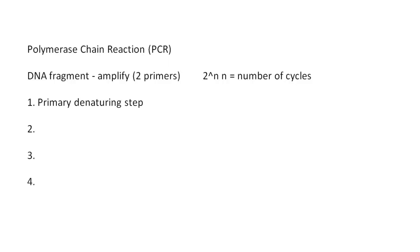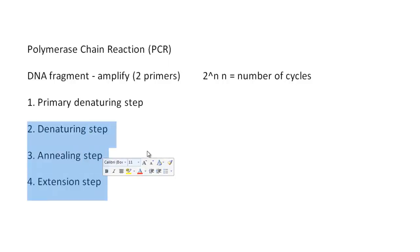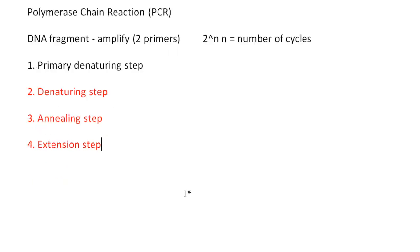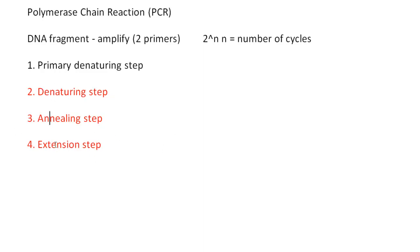Linking the three core cycle steps together: you have a denaturing step, then an annealing step, then an extension step — I'm highlighting these three in red because this is where the magic of PCR happens. Every time primers anneal to the template and extend, they need to be broken apart again in order to create more template — that's how you get the exponential number of products based on cycle number. One pass through denaturing, annealing, and extension equals one cycle, and n is the number of cycles.